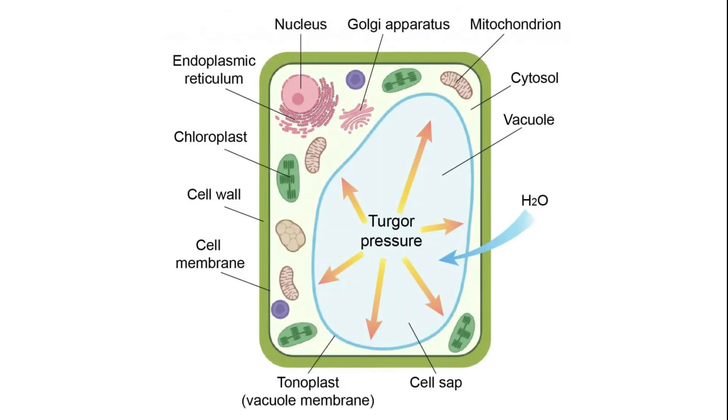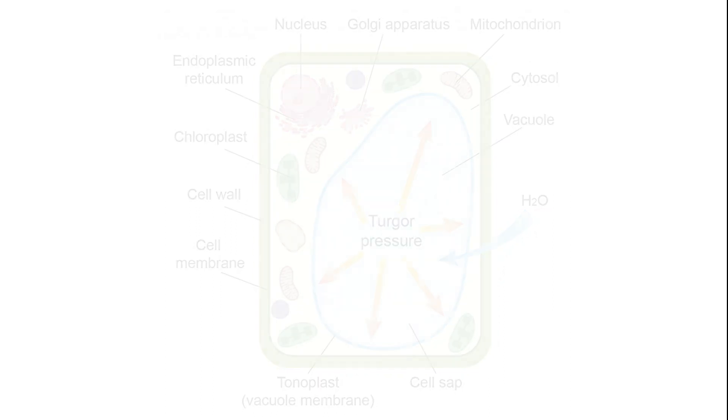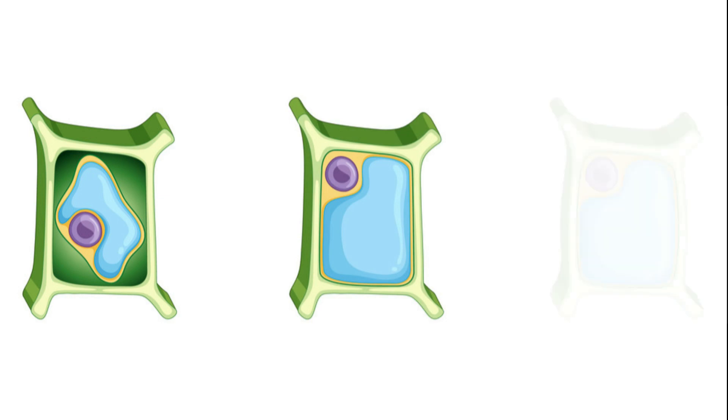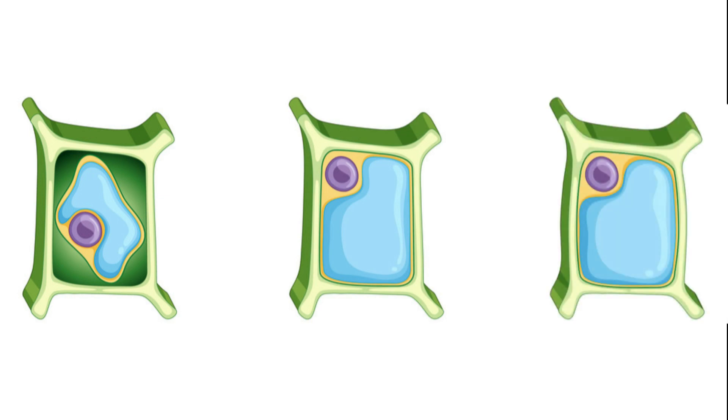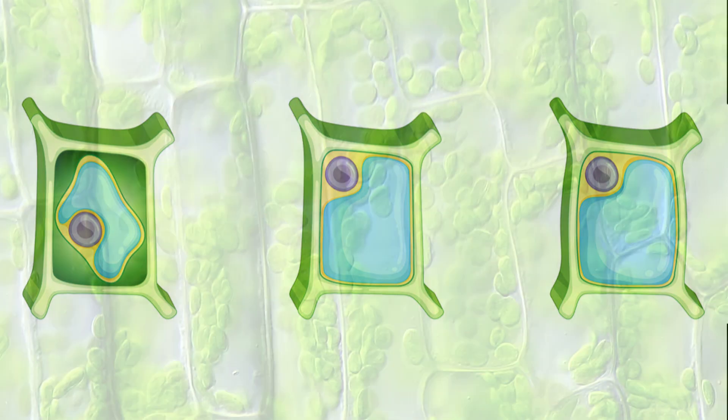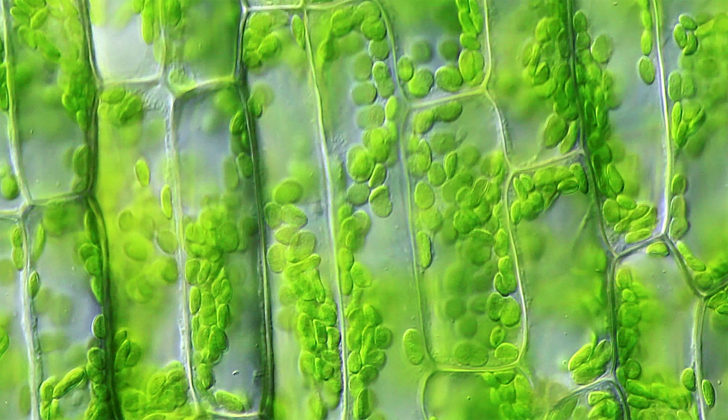Cellular expansion and growth. In plant cells, vacuoles play a pivotal role in determining cell size and growth. As the vacuole accumulates water, it exerts pressure against the cell wall, contributing to the enlargement and expansion of the cell. This is what gives plant cells their rigidity and contributes to the growth of plant tissues.